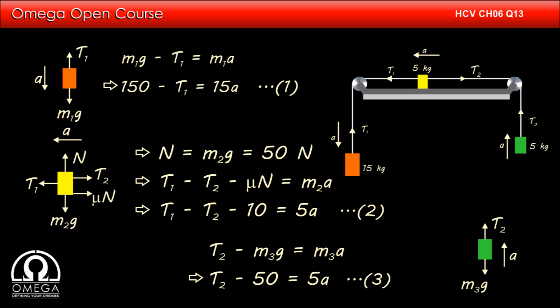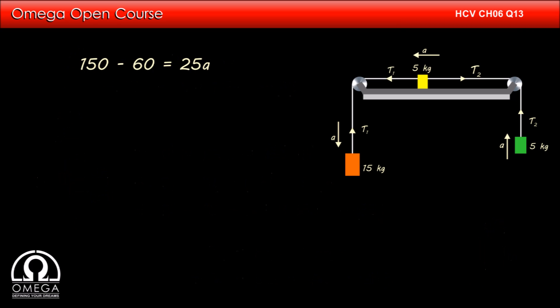Adding equations 1, 2, and 3, we get 150 minus 60 equals 25a, which implies 90 equals 25a, or a equals 3.6 m/s².